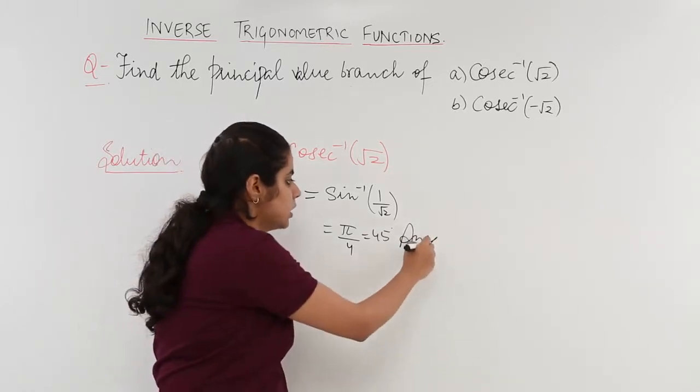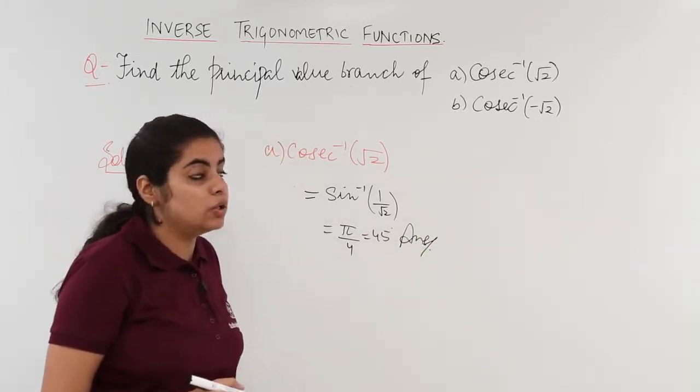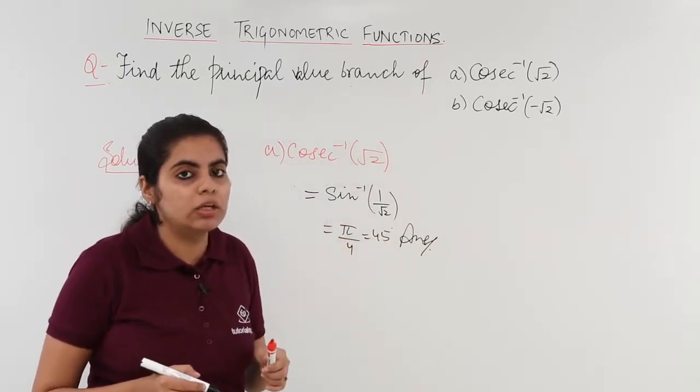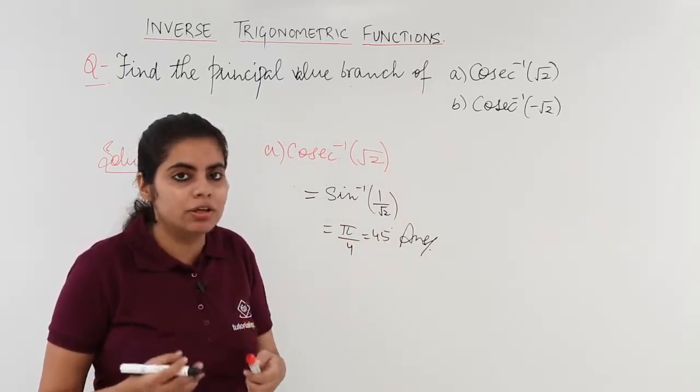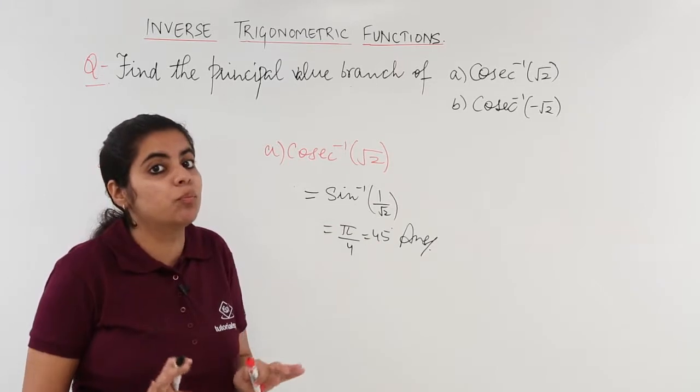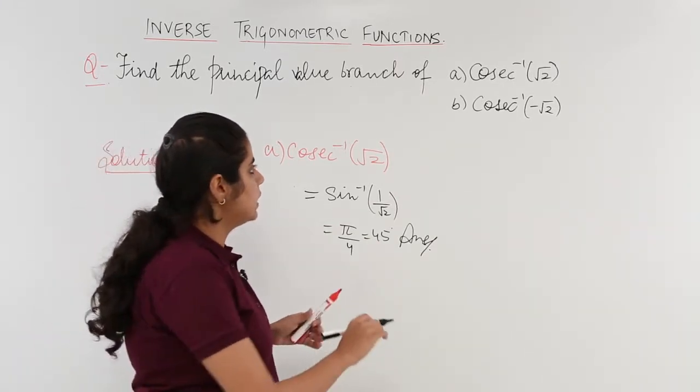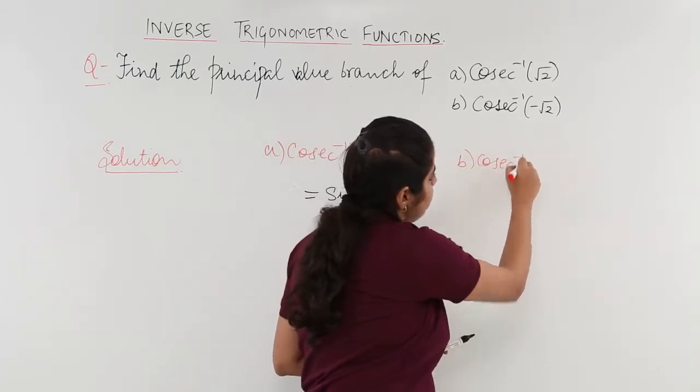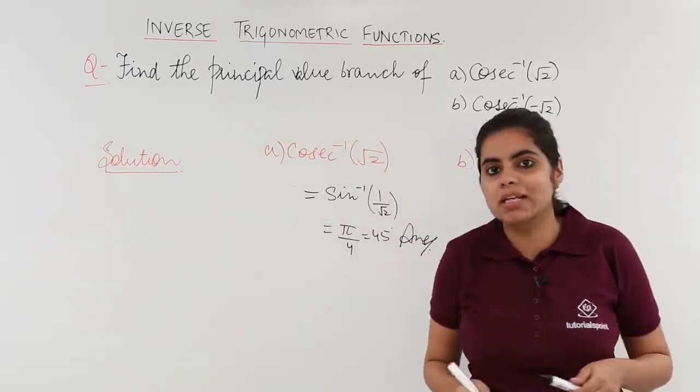As simple as that. Now what is the value of the second part? Cosecant inverse minus root 2. We already know in minus sign related questions we have to take more care. So let's see the second part: cosecant inverse of minus root 2.